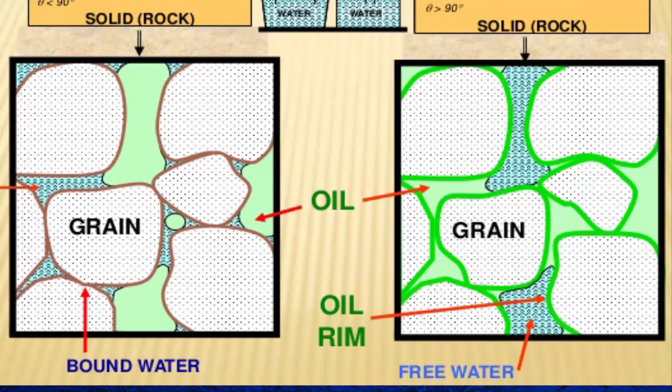Sandstones usually have oil in the center of the pore, and water is on the outside of the pore in contact with the sand grains. Because of this, most sandstones are water-wet.